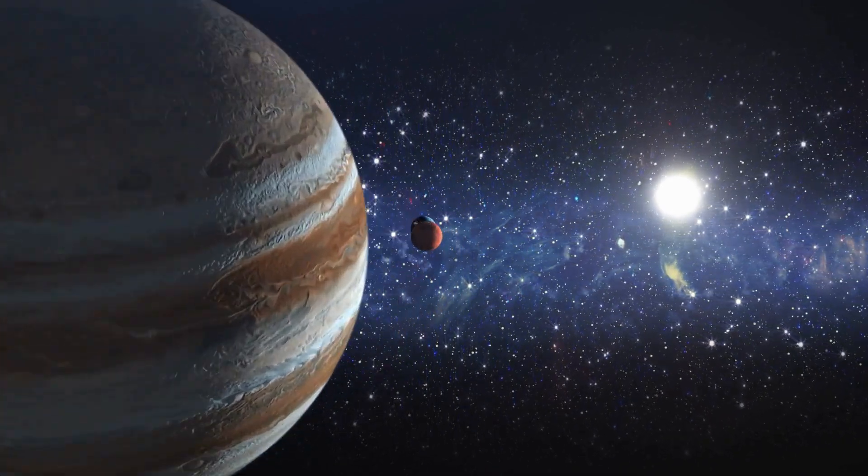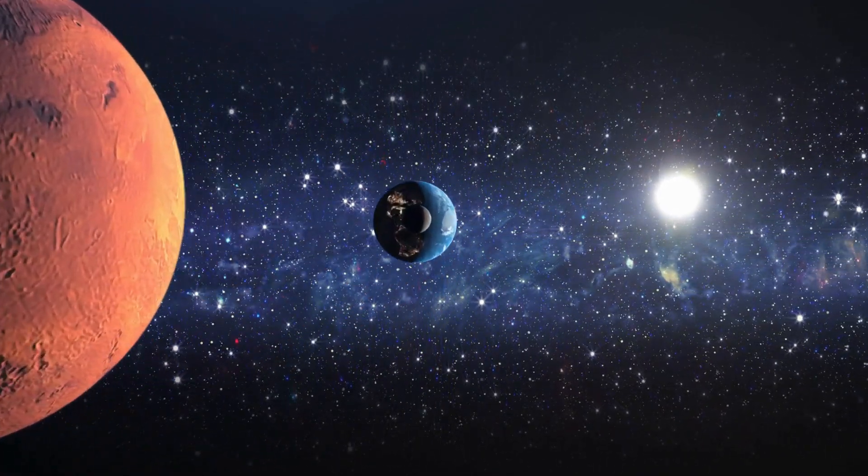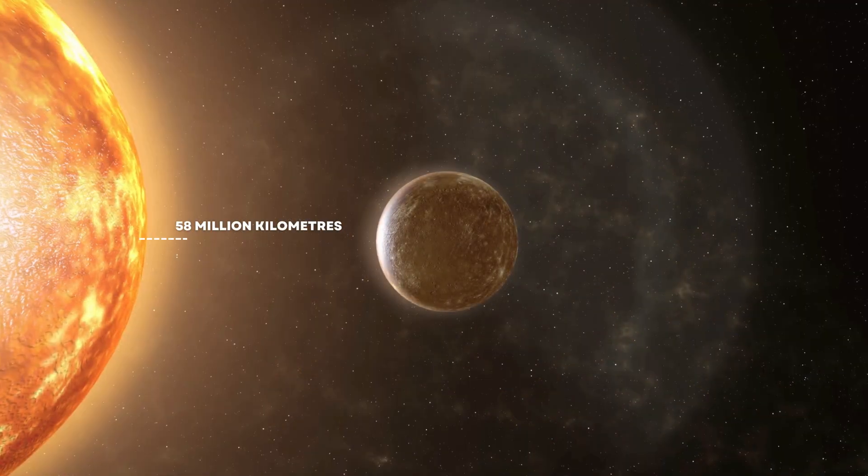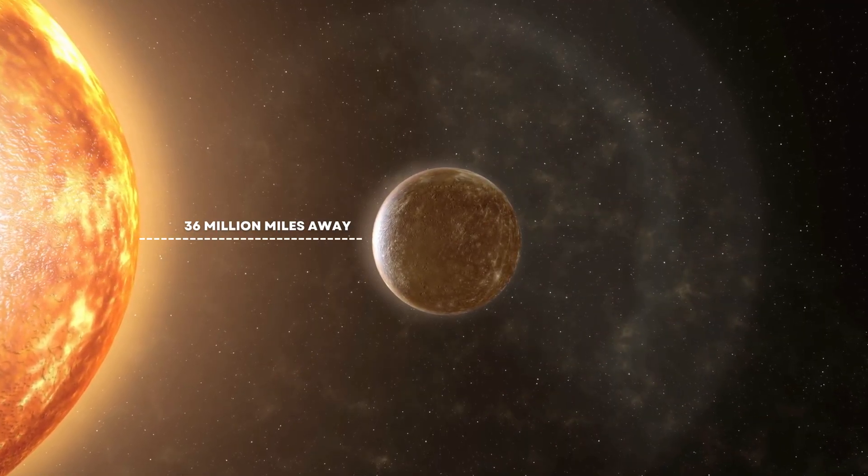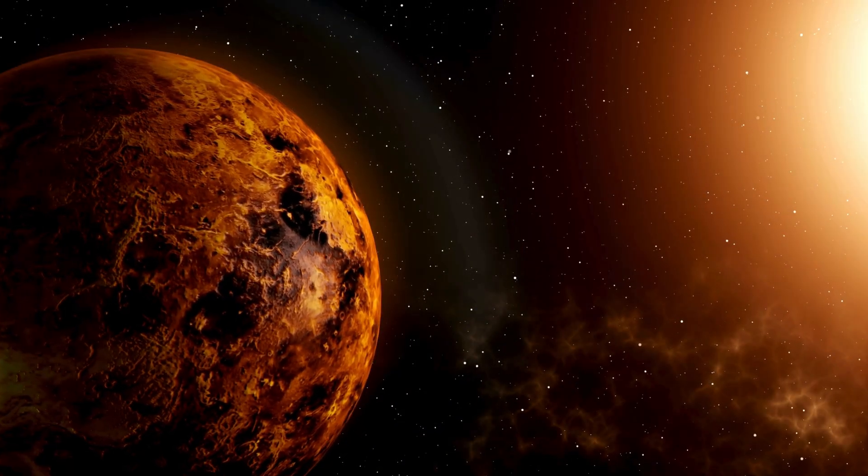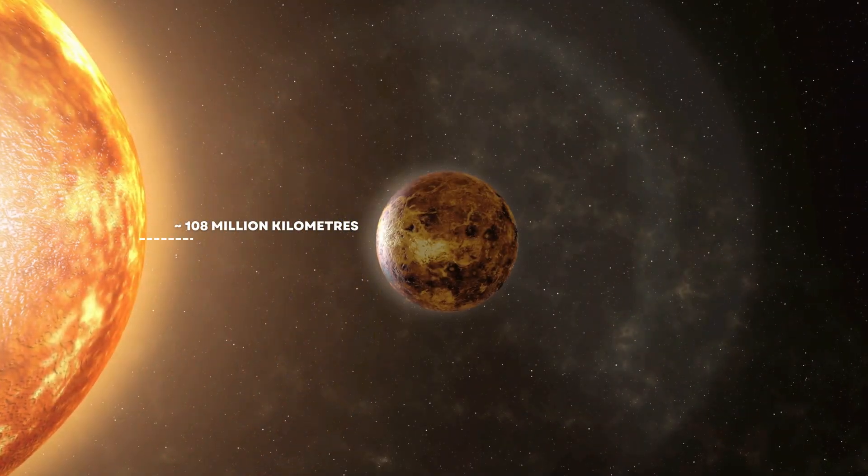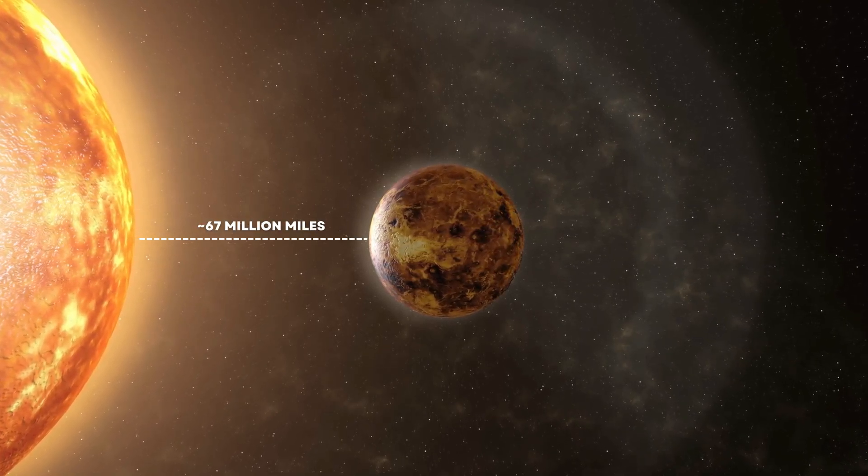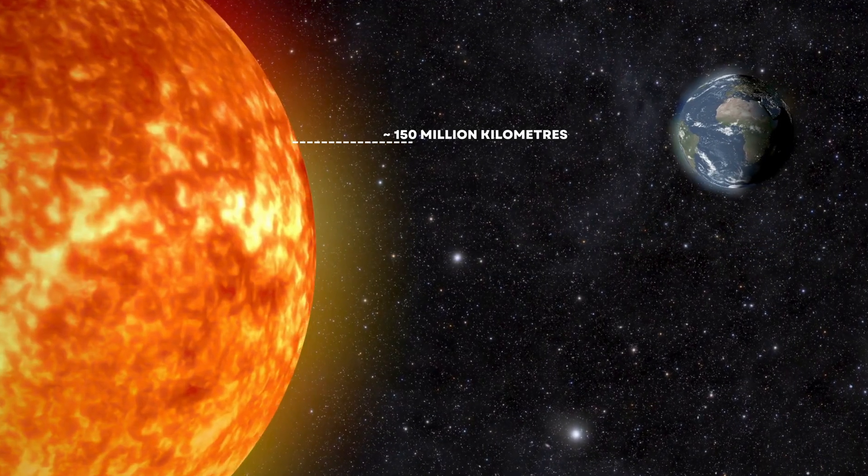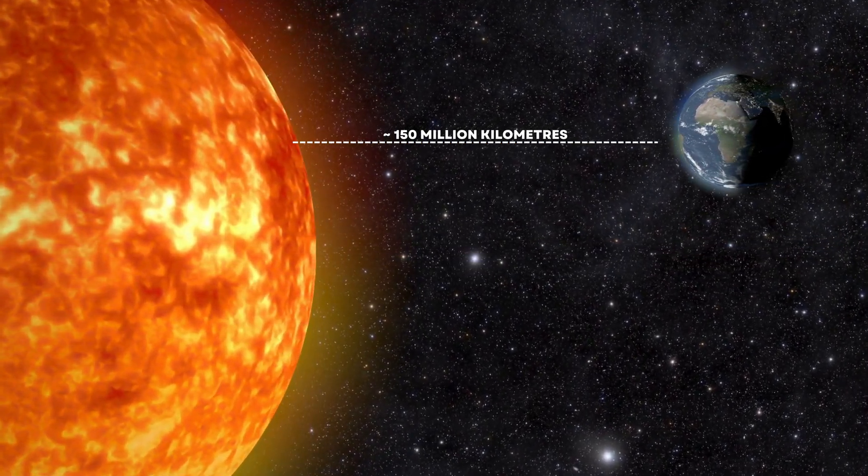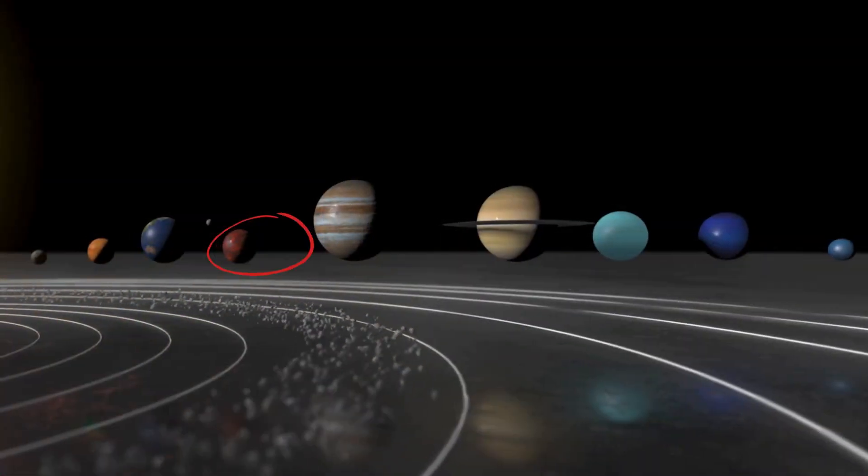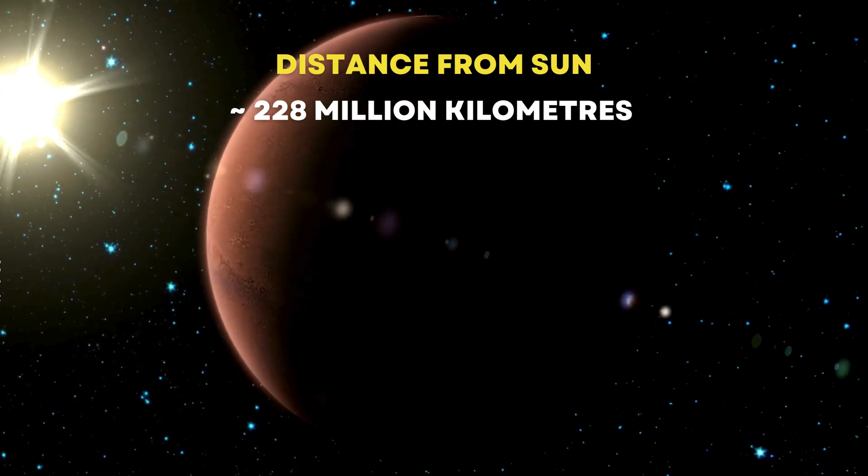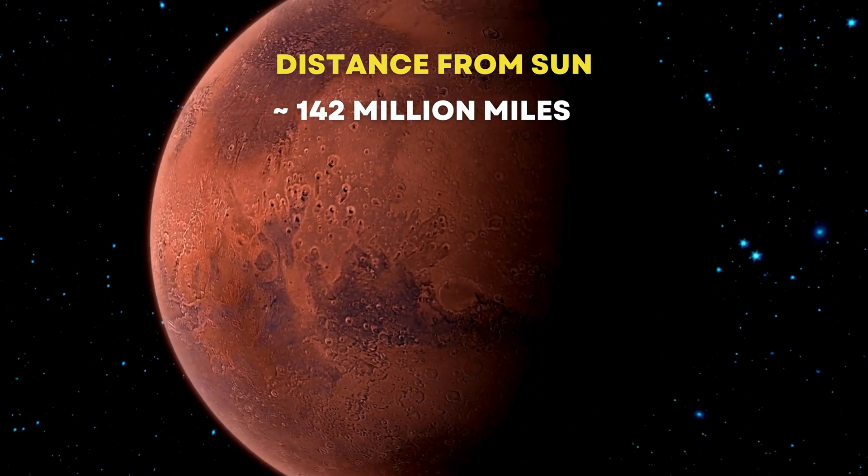Now, let's zoom in on our solar system and explore the distances between the planets, starting with the closest planet to the Sun, Mercury, which is about 58 million kilometers, or 36 million miles away. Then we have Venus, our neighboring planet, at around 108 million kilometers, or 67 million miles from the Sun. The Earth, our home, orbits the Sun at an average distance of about 150 million kilometers, or 93 million miles. Beyond Earth is Mars, known as the Red Planet, situated around 228 million kilometers, or 142 million miles from the Sun.